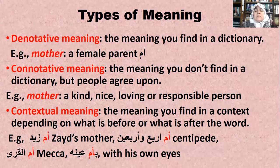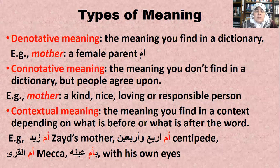Contextual meaning is the meaning you find in a context depending on what is before or after the word. For example, when you say 'Zayd's mother' (Om Zayd), or 'Om 44,' or 'Om Al-Qura' (Mecca), or 'with his own eyes' — look at the word 'Om' here.